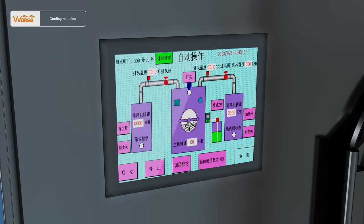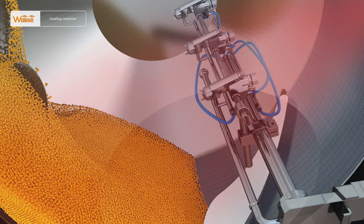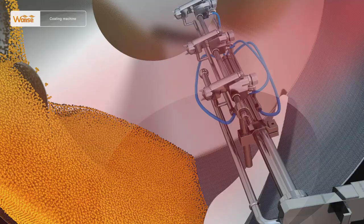Second, preheating of tablets or pills to be coated. Start the hot air, air exhaust, and main machine to preheat the tablets or pills to be coated from 38 to 45 degrees Celsius.